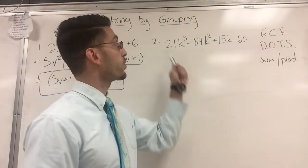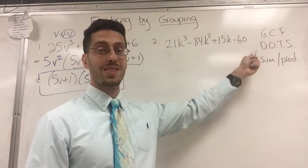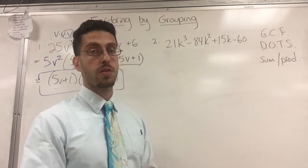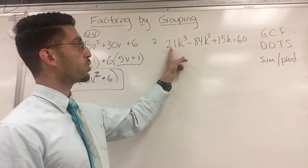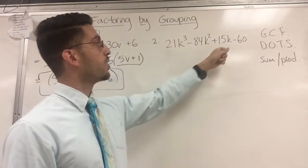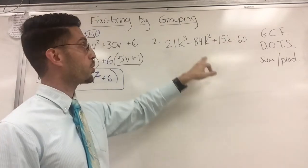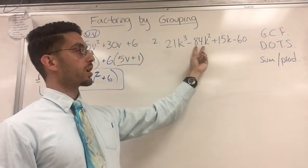Step one, look for a GCF in all four terms. This time, there is one. It's three. If you're not sure, you should know 21 is divisible by three. 15 and 60 are all divisible by three. The only one that might trip you up is 84. But here's the trick.